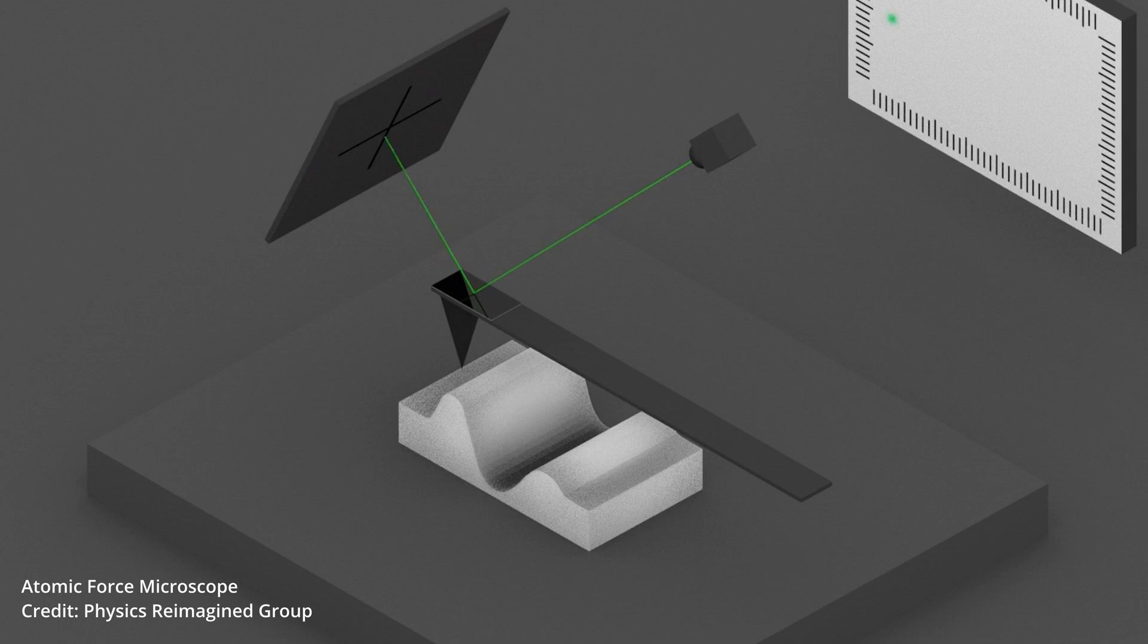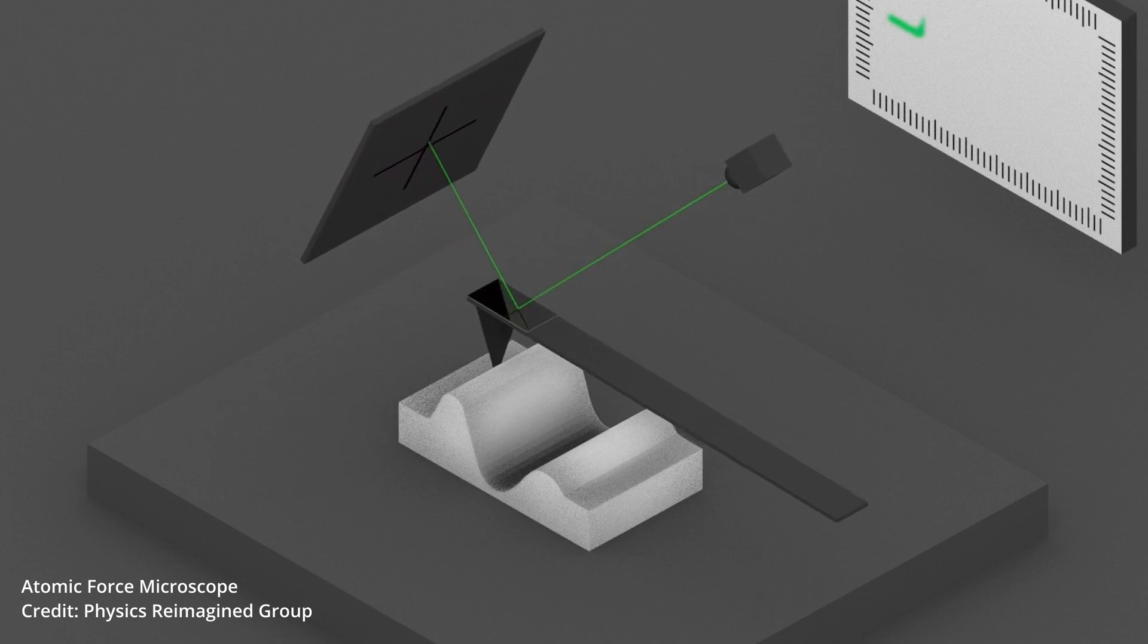The AFM tip scans the surface, moving up and down as it scans because of the surface topography. The up and down movements cause laser beam shifts to be picked up by the detector.